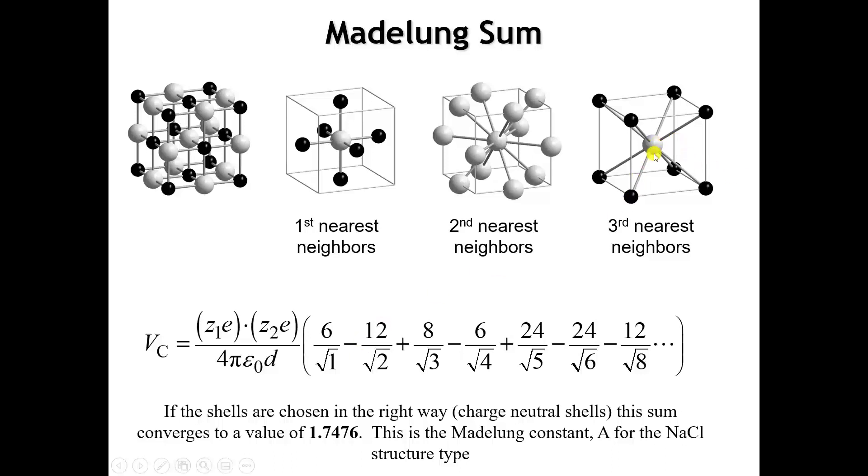We can look at the third nearest neighbors, which are the sodium ions at the corners of the unit cell. There's eight of those neighbors, and the distance is square root 3 times d. You can keep going to larger and larger shells, and you get this series. What we really want is to take that series all the way out to infinity and see what it converges to. If you do that summation correctly, you can show that for this crystal structure, sodium chloride, this converges to a value of 1.7476 to five significant figures. We call that the Madelung constant for the sodium chloride structure type.